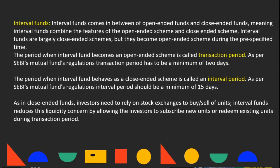Then comes interval funds. Interval funds come in between open-ended and close-ended funds, combining features of both. Interval funds are largely close-ended schemes, but they become open-ended schemes during a pre-specified time. These interval funds are basically designed to increase liquidity — if any investor wants to exit, interval funds give them the opportunity because for a certain period, interval funds become open-ended. The period when an interval fund becomes open-ended is called the transaction period.